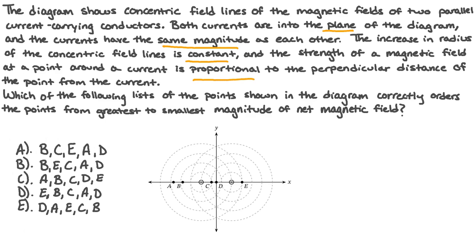Which of the following lists the points shown in the diagram correctly from greatest to smallest magnitude of net magnetic field? The answer choices are: A) B, C, E, A, D; B) B, E, C, A, D; C) A, B, C, D, E; D) E, B, C, A, D; E) D, A, E, C, B.